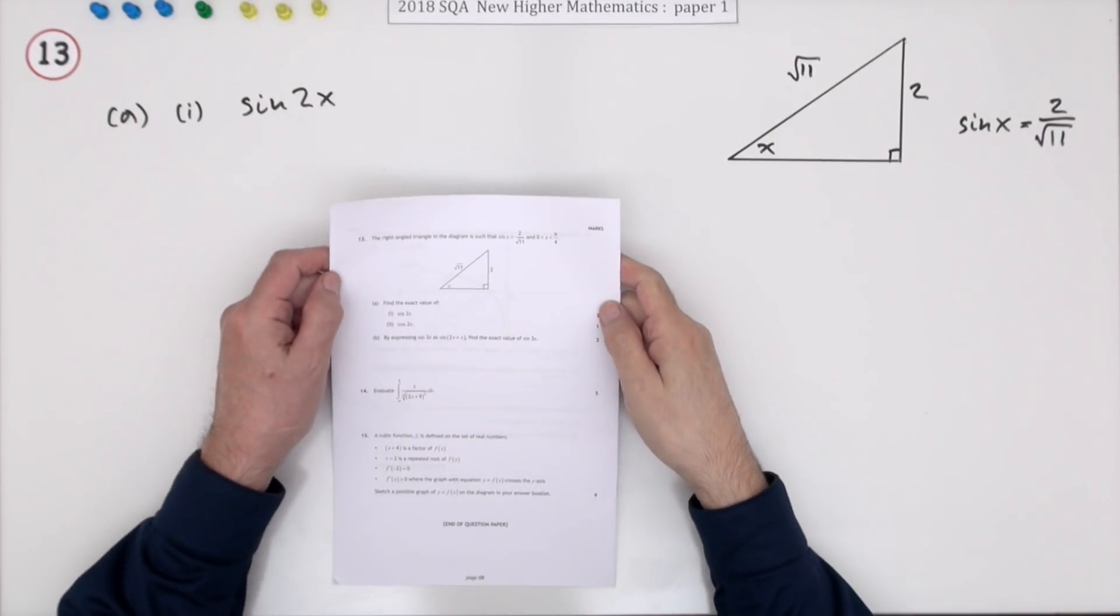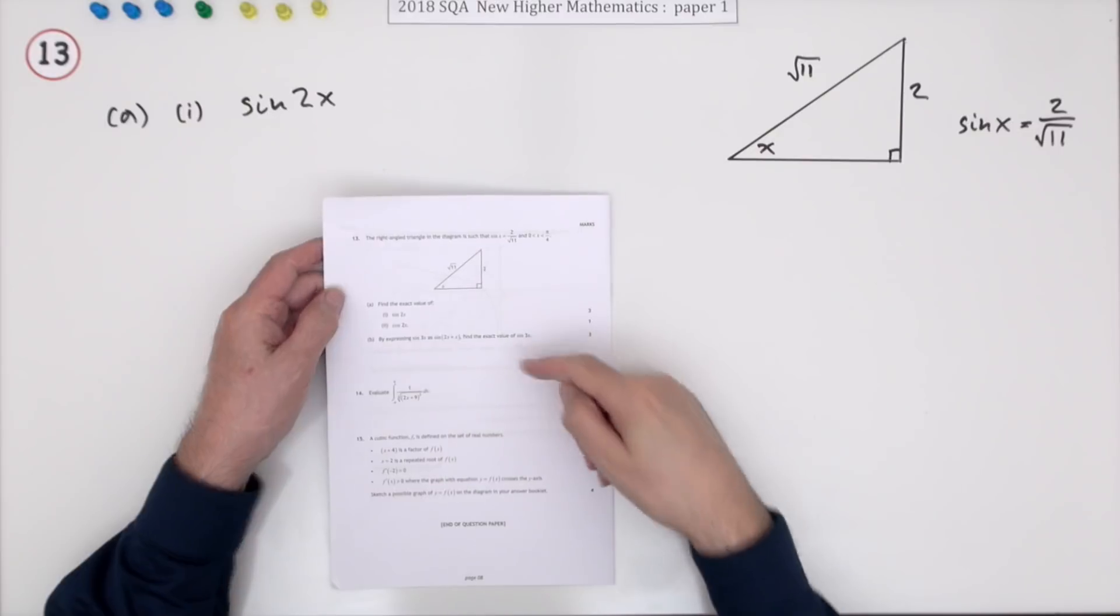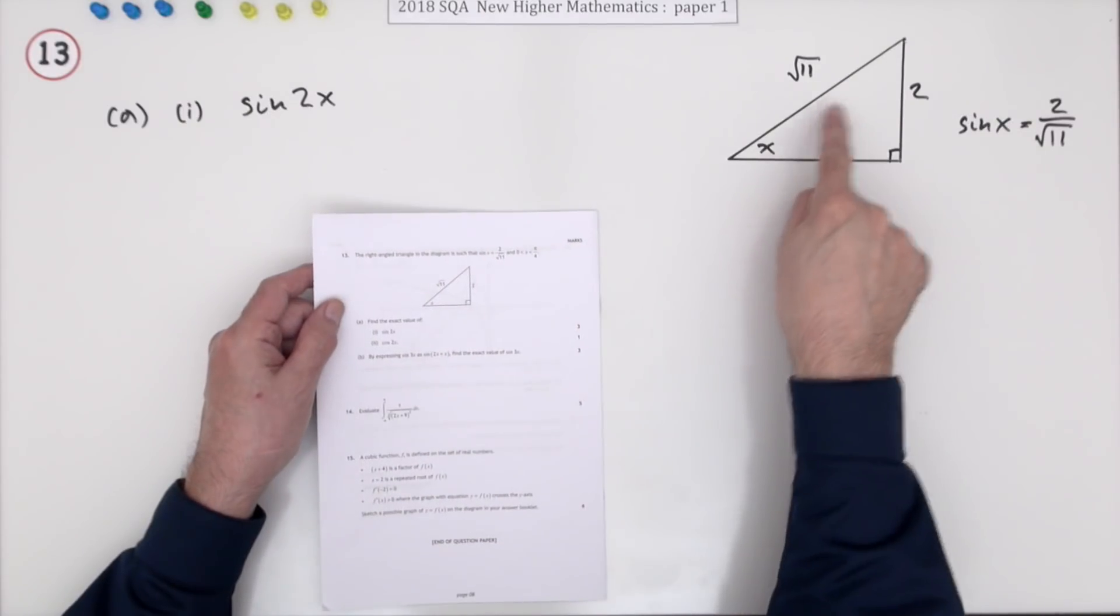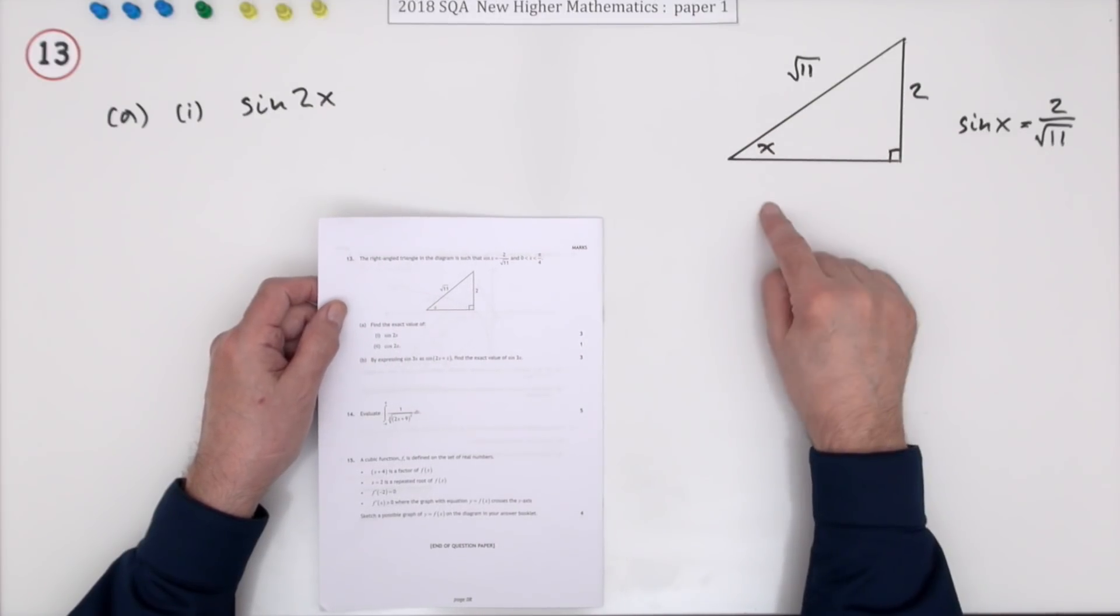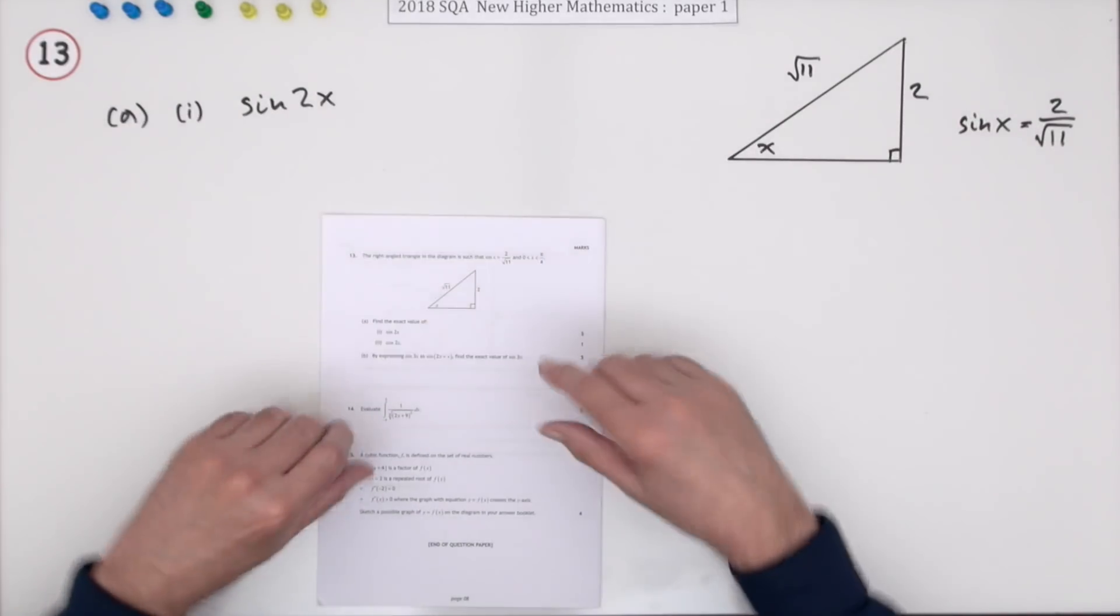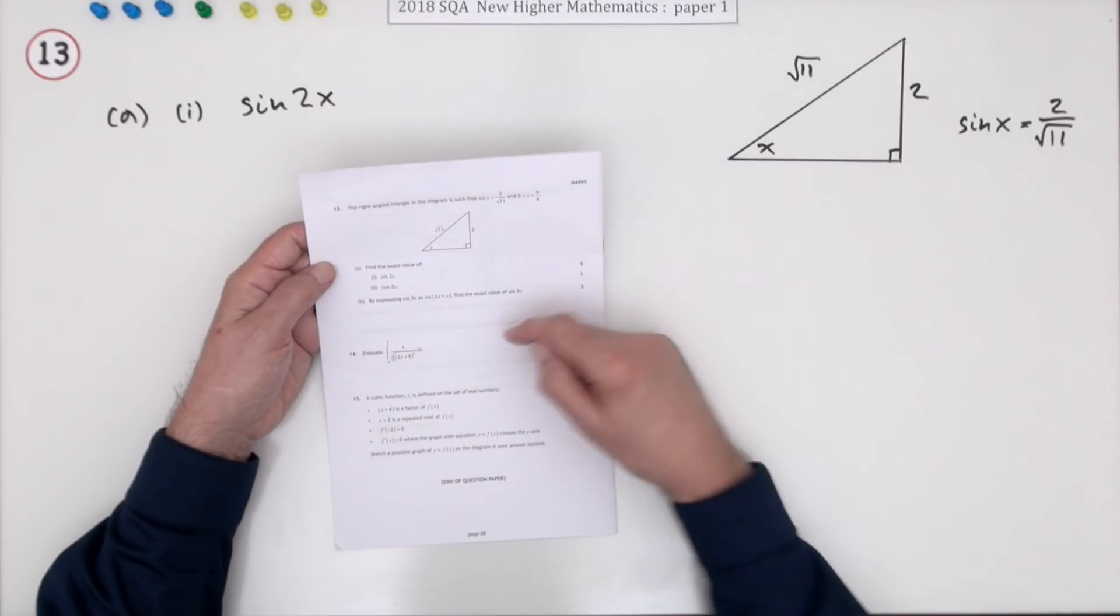Number 13 from the 2018 SQA Higher Maths Paper 1, a seven mark question with three parts, but really just two parts. As soon as you see that triangle with two of the sides given, you know what's going to happen: you're going to find the third side that lets you find sines and cosines, and you can put them into the formulas at the front. It gives you this right angle triangle and also tells you the sine, presumably to give you a mark for that.